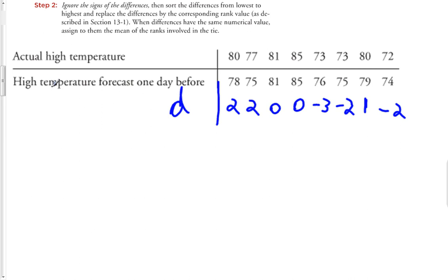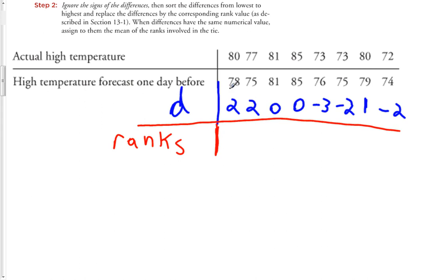Step two: ignoring sign, sort the differences from lowest to highest and replace the differences with the corresponding ranks. The smallest number here is negative three, which receives a rank of one. The next smallest is negative two, and there are two values tied at negative two. Those would occupy ranks two and three, so we find the average — 2.5 — and assign both of those values a rank of 2.5.